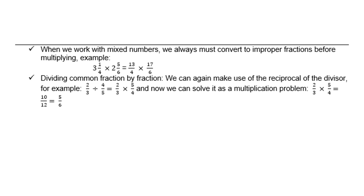Dividing common fractions by a fraction, we can make use of the reciprocal of the divisor. For example, two-thirds divided by four-fifths is the same as two-thirds times the reciprocal of four-fifths, which is five over four. We also call it the multiplicative inverse. Two-thirds times five over four gives you ten over twelve, which is the same as five over six.